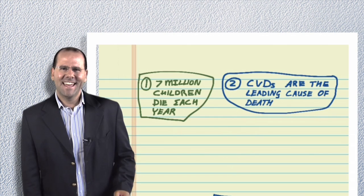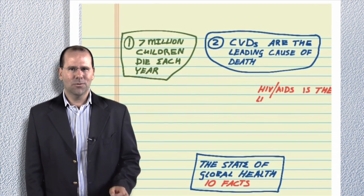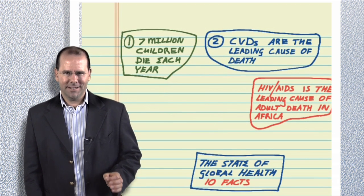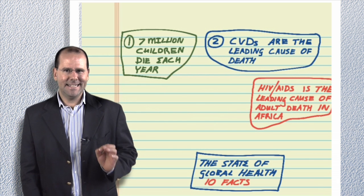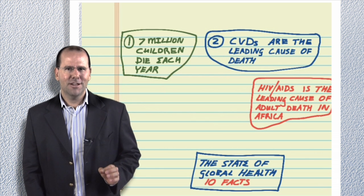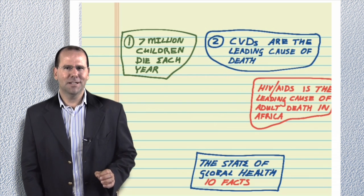Fact number three: HIV-AIDS is the leading cause of adult death in Africa. The annual number of people dying from age-related causes worldwide is steadily decreasing from a peak of 2.2 million in 2005 to an estimated 1.8 million in 2010.